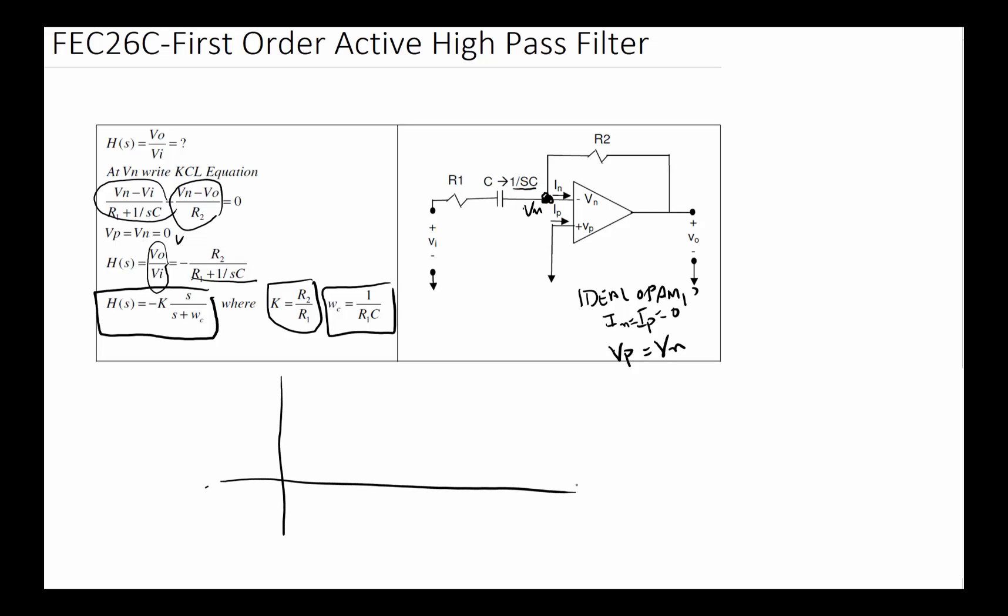If we were to plot the magnitude of H(jω) with respect to frequency, or do a Bode plot—let me just do a simple linear one—we will find out that it will be something like this, where this is the cutoff frequency equal to 1 over R1C.